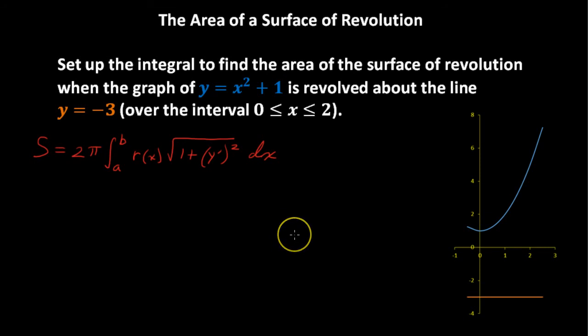In this video, we'll walk through an example of finding the area of a surface of revolution. Let's say we have the graph of the function y equals x squared plus 1, and that graph has revolved about the line y equals negative 3.